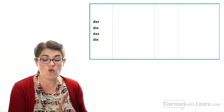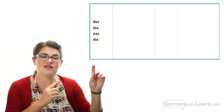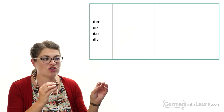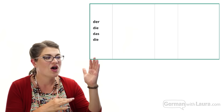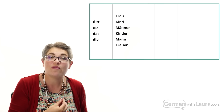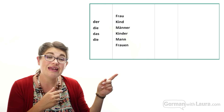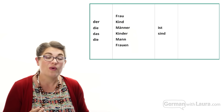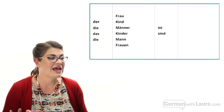Now on to the next drill. It's the same setup with the same columns — still just four — but this time we're practicing specifically plural nouns. We still have der, die, das, and I've added a separate plural 'die.' In the noun column we have Frau, Kind, Männer, Kinder, Mann, and Frauen. Now the verb column must have two options: 'ist' for singular nouns and 'sind' for plural nouns, then the same adjectives.